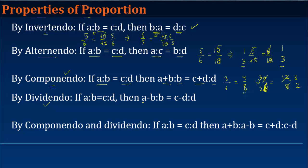Dividendo, again the same thing. If a is to b, so let's again take 3 by 6 and 4 by 8, right. a minus b is equal to 3 minus 6 upon 6. c minus d will be equal to 4 minus 8 upon 8. Again, 3 minus 6 upon 6 is minus 3 upon 6, which is equal to minus 4 by 8, which is true, because this is 1 by 2, this is also 1 by 2.